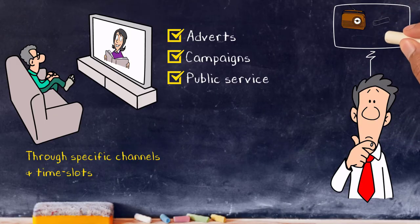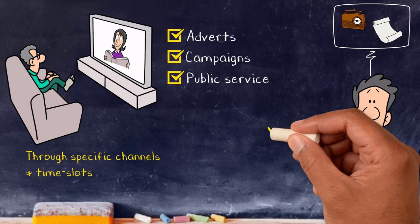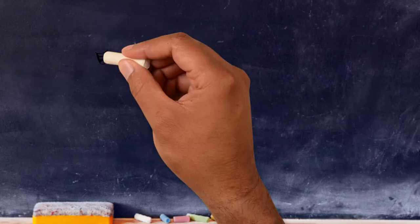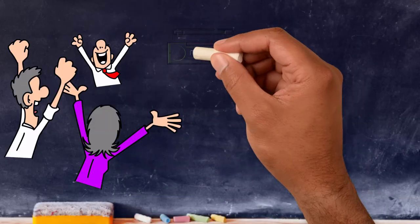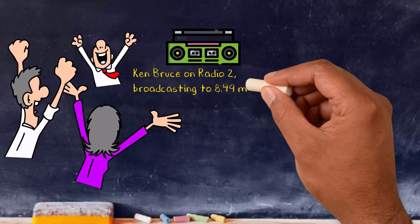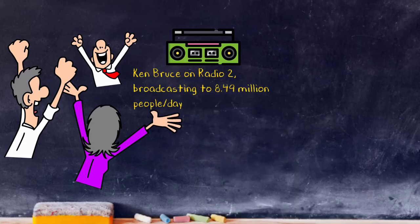You might think of radio and print as being a bit old-fashioned when it comes to mass communications, but I think they're still a vital way of getting a message to people. Britain's best-loved radio show is Ken Bruce on Radio 2 and he broadcasts to an incredible 8.49 million people every day.